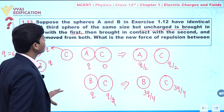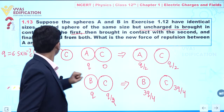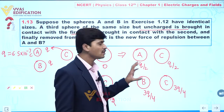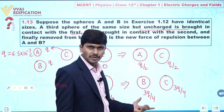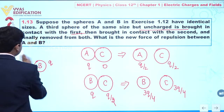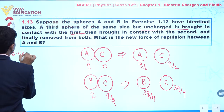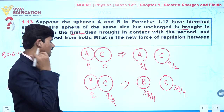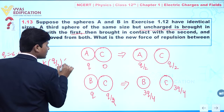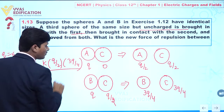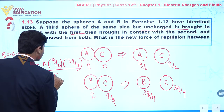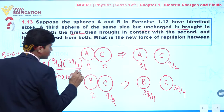The question asks: after C is finally removed from both, what is the new force of repulsion between A and B? We can see that charge at A is Q/2 and charge at B is 3Q/4. So the new force of repulsion = K × (Q/2) × (3Q/4) / R², where R = 50 cm = 50×10⁻² m.